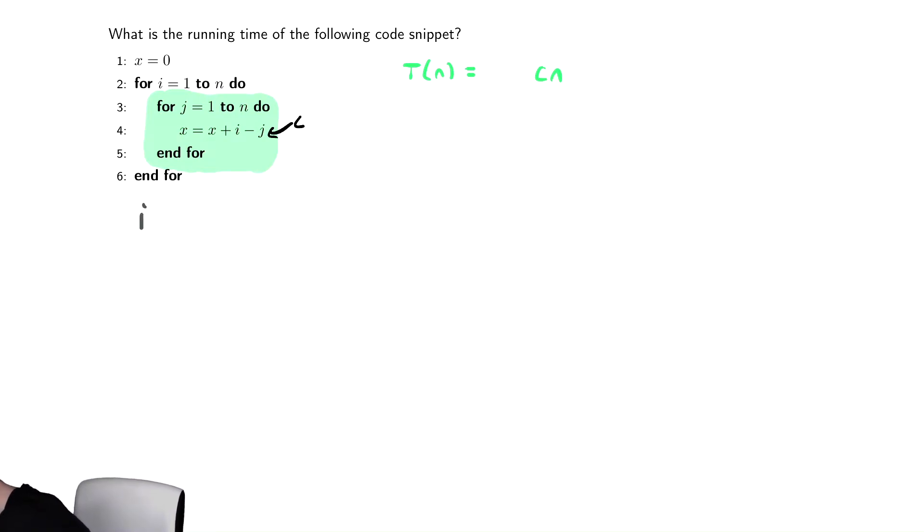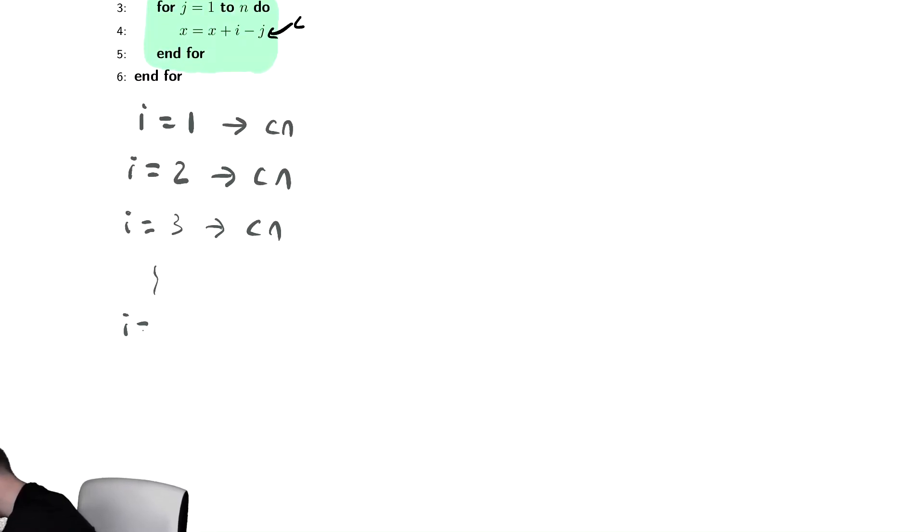we can know what that code does. The code in green takes CN time. When I equals two, it does the same thing. When I equals three, it does the same thing. All the way up until I equals N. It's CN.